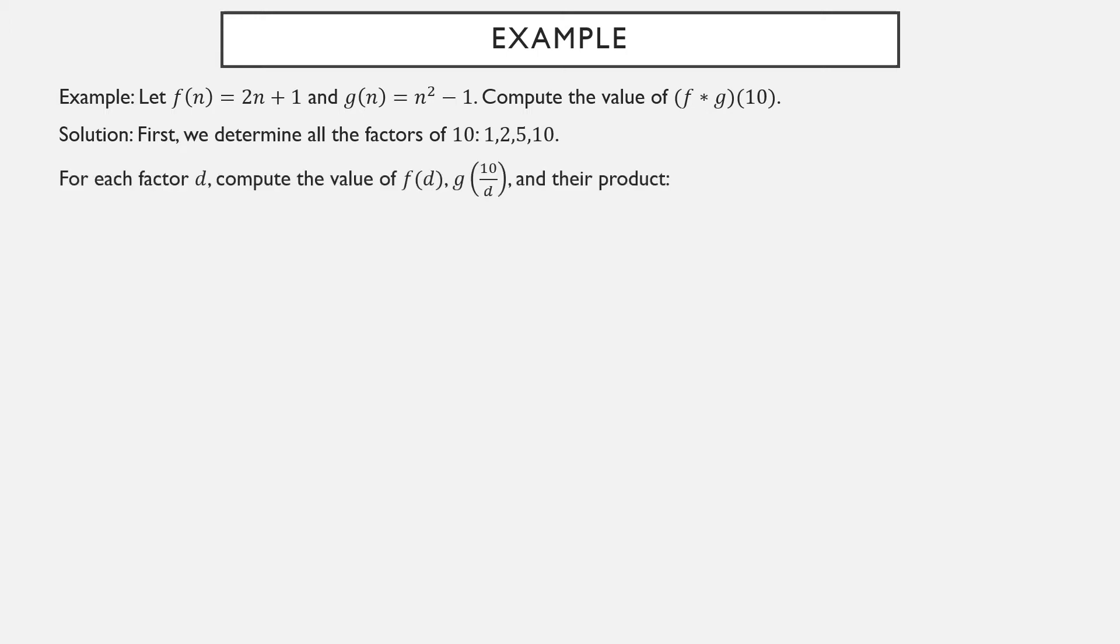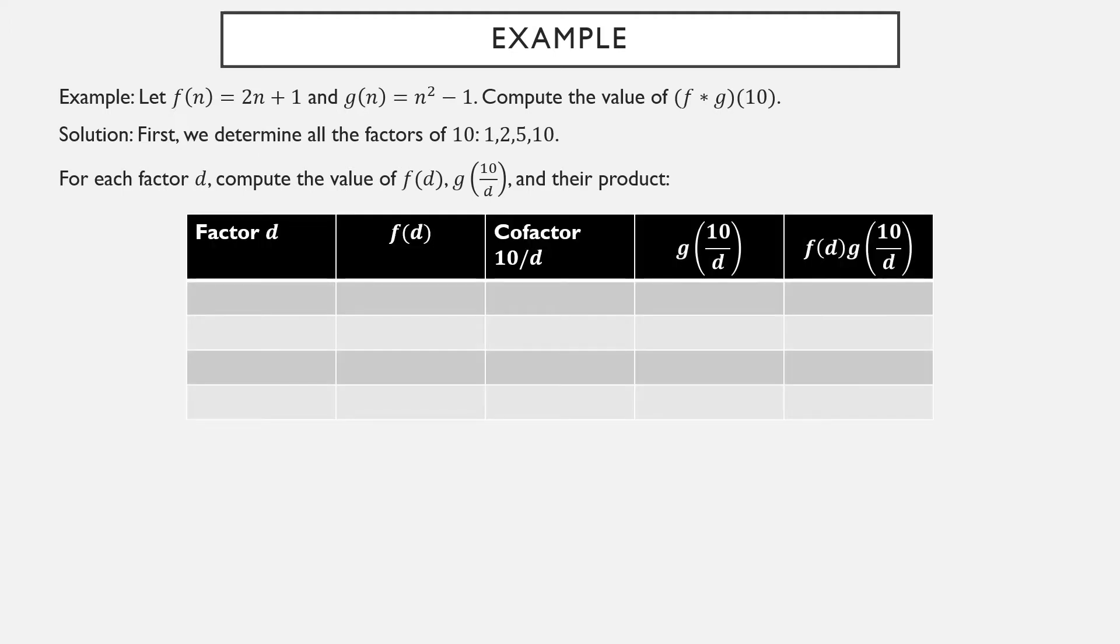So let's take a look at an example to get our heads wrapped around this new operation. Let f(n) be the arithmetic function 2n + 1 and g(n) be n² - 1. Let's compute the value f star g of 10 in particular. So first we have to determine all the factors of 10 and their 1, 2, 5, and 10, the positive factors specifically. For each factor, we compute the value f of that factor and g of the cofactor. Then we're going to take that product. So the factors are 1, 2, 5, and 10.